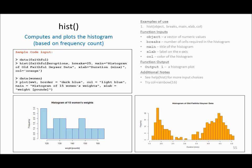hist is a function which computes and plots a histogram based on frequency count. For example, if I have a dataset called women and I plot the histogram, it tells me that there are three women whose weight is less than 120 pounds, two women with weights between 145 and 150 pounds, and only one woman whose weight is greater than 160 pounds. Using a histogram basically gives you a summary of your data.